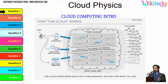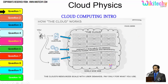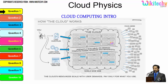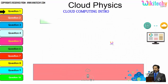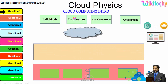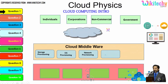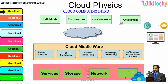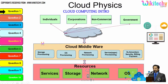With the cloud, I can load files, applications, or my website so that any user can access it, and tracking or monitoring becomes really easy. There are different types of users: individuals, corporations, non-commercial people, and government. From any of these users, they are able to access services, storage, network, or operating systems via the cloud middlewares — specialized software provided by the cloud service provider to access resources.